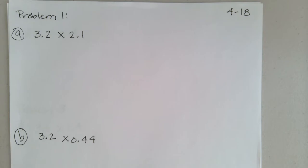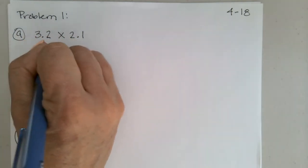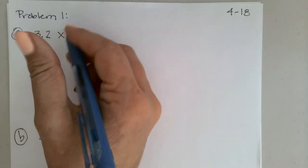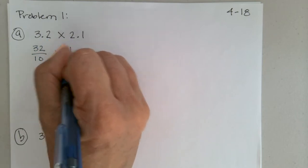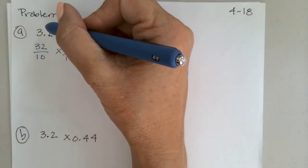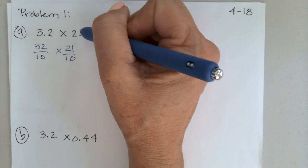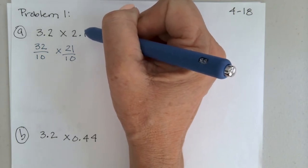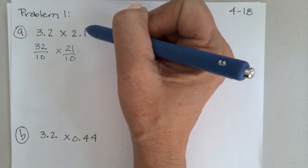So how would you write that as a fraction multiplication expression? Would you write 32 tenths times 21 tenths? That would be the right thing. Before we multiply these two decimals, let's estimate what our product will be. 3.2 is pretty close to 3, and 2.1 is pretty close to 2. So I'd say our answer will be around 6.